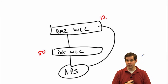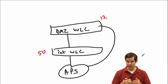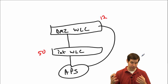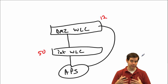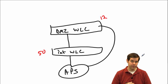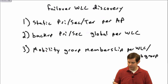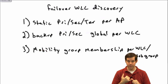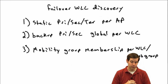You might wonder: why not just use different mobility group names everywhere to avoid this? Sometimes you must use the same name — the primary reason being CCKM Fast Roaming. CCKM only works between controllers in each other's mobility group list that share the same group name. Anytime CCKM is required, there's no way around it and APs will learn about those controllers as failover options. But we have many methods to control the failover priority deterministically.